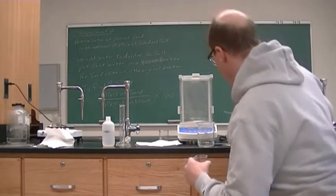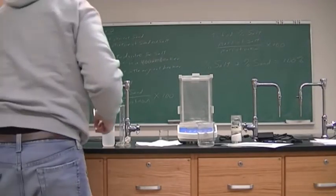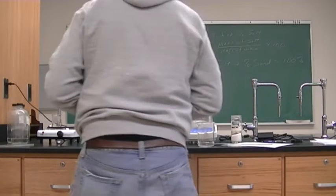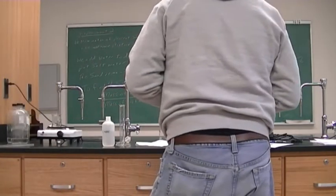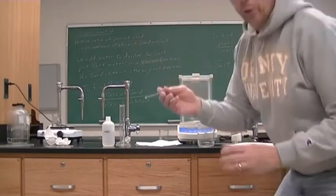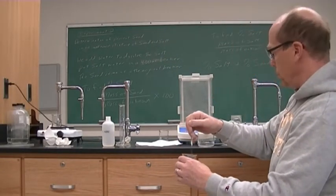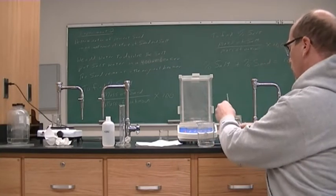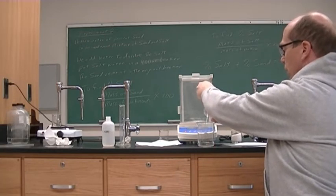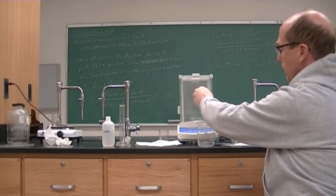Number two is ready for decanting. We can use the same stirring rod because all of the salt is going to dissolve and no sand is going to stick to our stirring rod. So again we're going to decant — which means pour out the salt water, leave behind the sand.